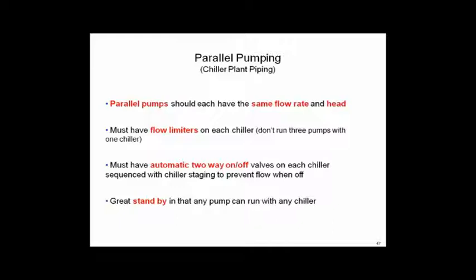In summary for parallel pumping: all pumps should be the same flow rate and head to keep it simple. Flow limiters on each chiller are mandatory to prevent tube erosion from multiple pumps overflowing a single condenser. Automatic two-way on/off valves are required by ASHRAE 90.1 2010 — if you take a chiller offline, you must stop the flow through its condenser. Those old process engineers who love parallel pumping for the standby know exactly what they're doing, and they use flow limiters and two-way valves. There is nothing wrong with it if you include those components.